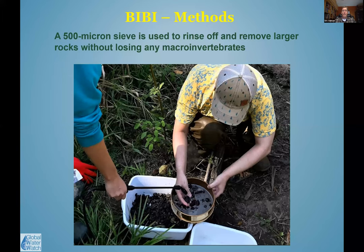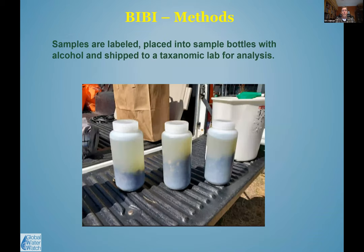A sieve is used to rinse off and remove larger rocks — because if the jar is full of large rocks there won't be room for the sample. As we rinse, we keep what remains in the sieve so no sample is lost. Ultimately the samples are labeled, placed into sample bottles with alcohol, and sent to a taxonomic lab where they're examined under a microscope. The lab classifies organisms in fine detail and generates a score.